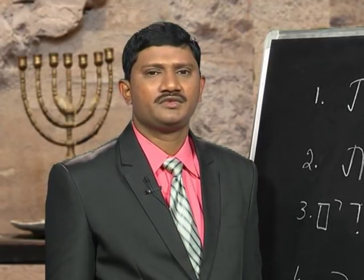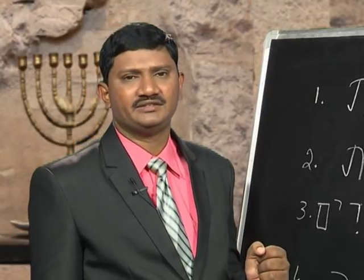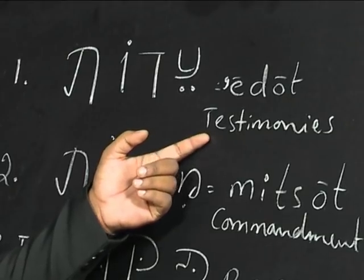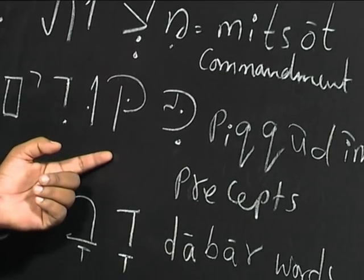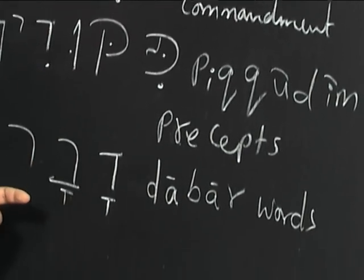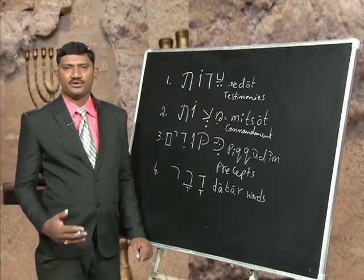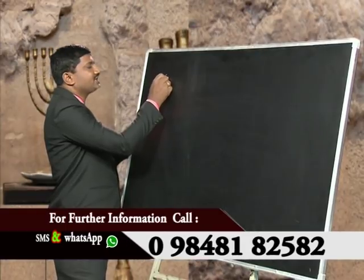So these were among the ten — these were the four words that we have seen: Edot which means testimonies, Mitzvot which means commandment, Pikudim which means precepts, and Dabar which means word. So today we would like to go further and learn what is the other word that is used for the word of God. Now let us learn the fifth word that is used in Psalm 119 or in Psalm 19.